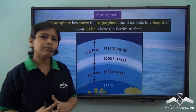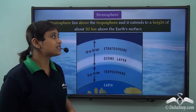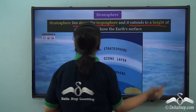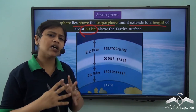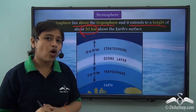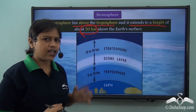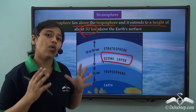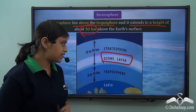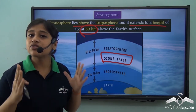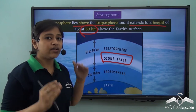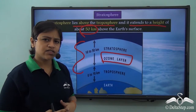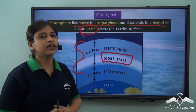The stratosphere is above the troposphere and extends to a height of 50 km from the earth's surface. We also need to remember that in this layer we have a very important region — the ozone layer. The ozone layer is not a separate part; it is just a part of the stratosphere. So the stratosphere is inclusive of the ozone layer.